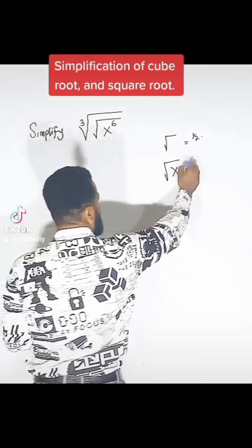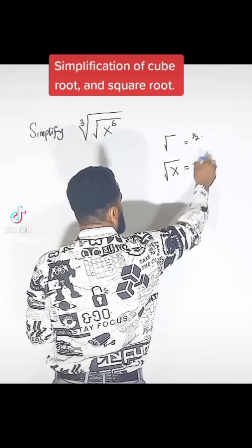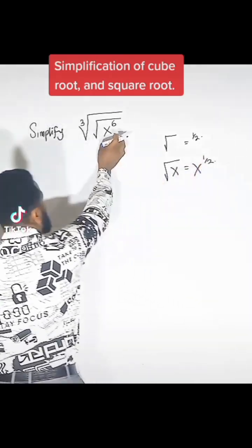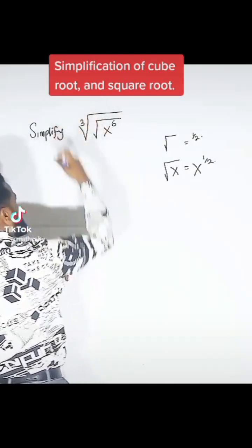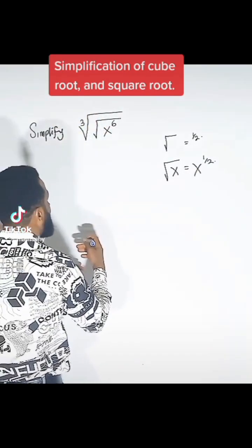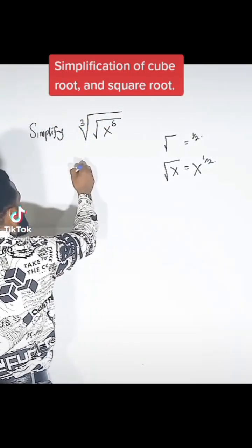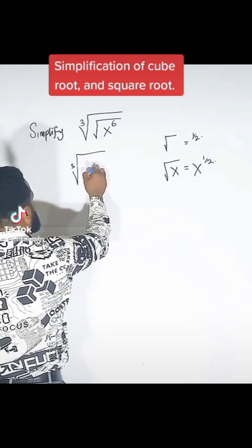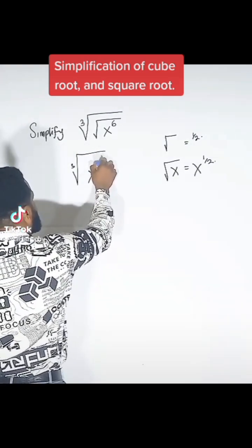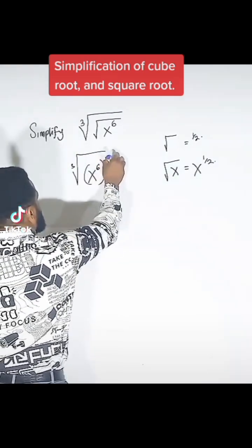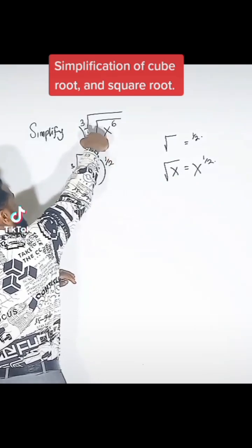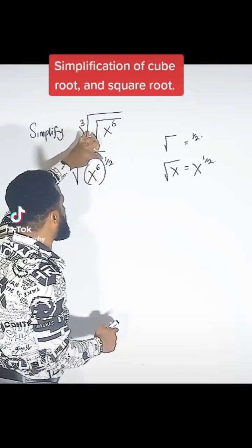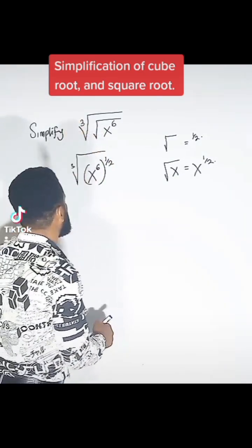The square root of x is going to be x raised to the power 1 over 2. I'm going to start from the inner one and then extend outward. So I'm going to have the cube root of x raised to the power 6, or raised to the power 1 over 2, because of this square root — this square root has become 1 over 2.